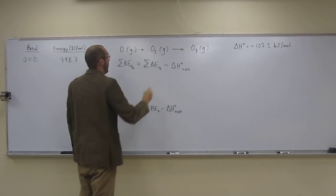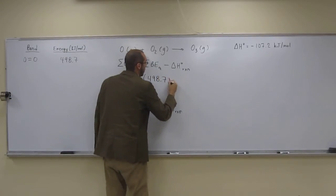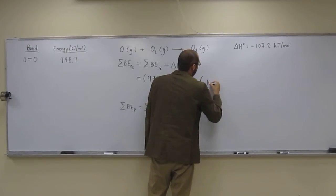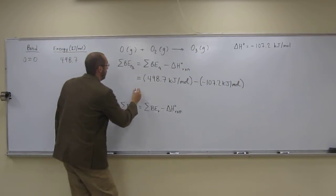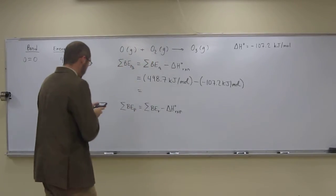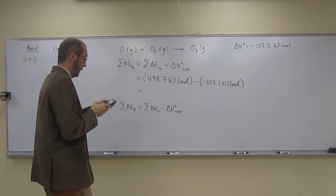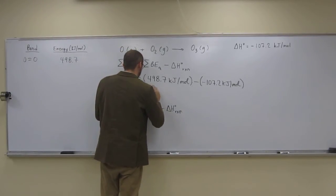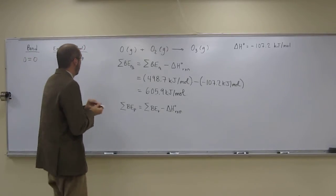So this is in kilojoules per mole, that's in kilojoules per mole, so we just plug and chug. So we've got 498.7 kilojoules per mole minus a minus 107.2 kilojoules per mole. So we get 498.7 plus 107.2, which gives us a total energy of 605.9 kilojoules per mole. That's the total bond energy of O3.